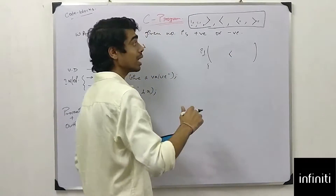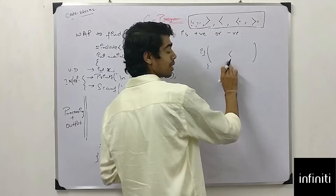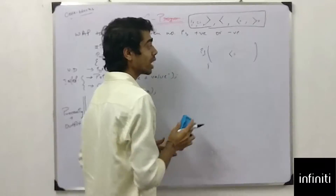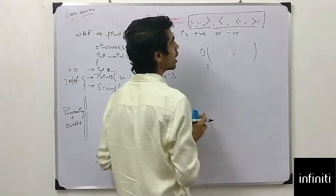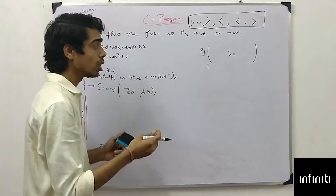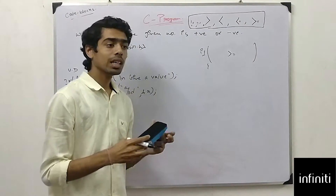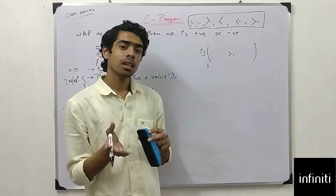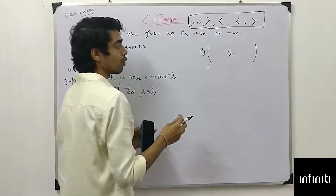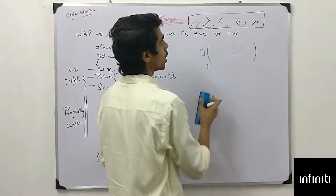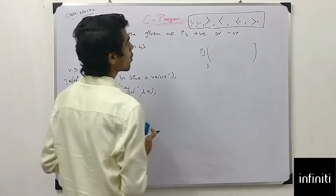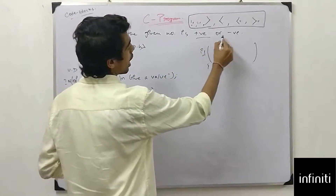For less than or equal to, we write less-than then equal-to. For greater than or equal to, we write greater-than then equal-to. You have to follow the order of the words: greater-than-equal-to means write greater-than first, then equal-to. Here we have to find whether the number is positive or negative.